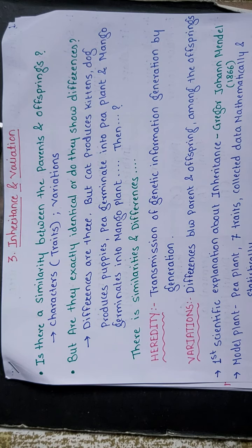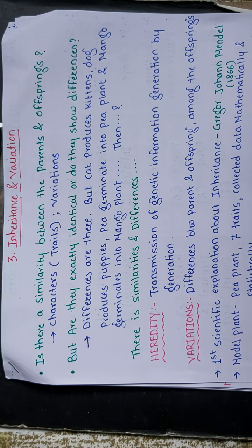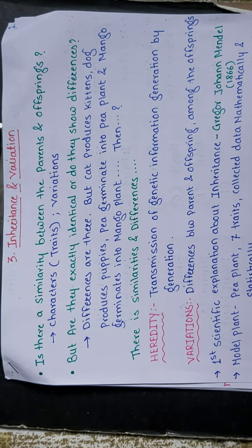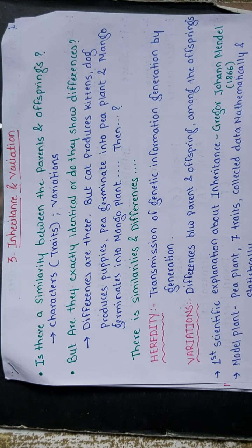We have given examples like: a cat produces kittens, a dog produces puppies, a pea germinates into a pea plant, and a mango germinates into a mango plant. In that sense they are identical. But how are they showing differences? What are the similarities? What are the differences?